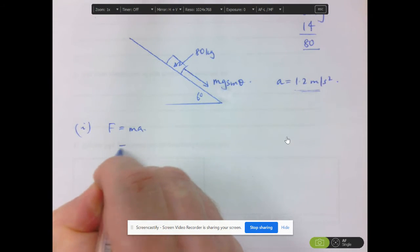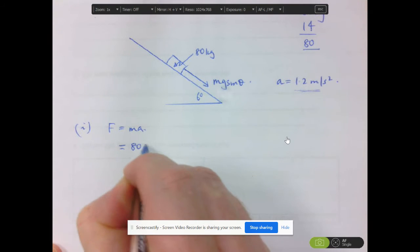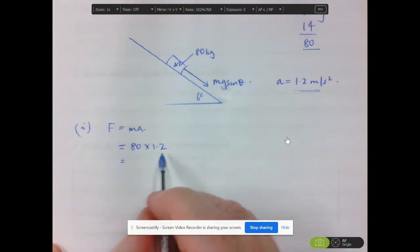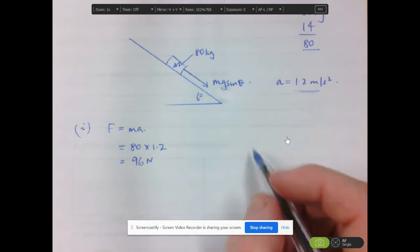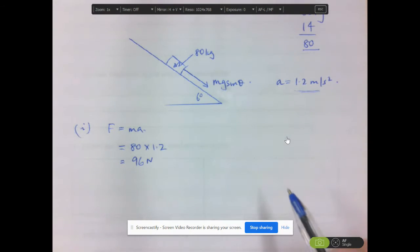The force needed would be 80kg times 1.2. When you do that, that is 96 newtons. So overall we need 96 newtons to maintain this acceleration here.